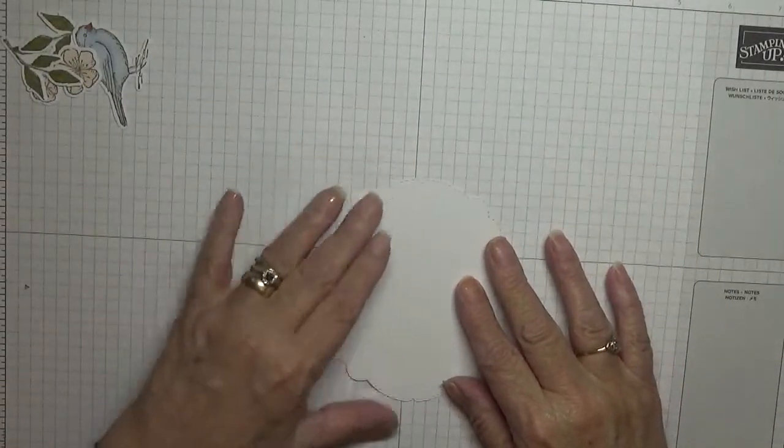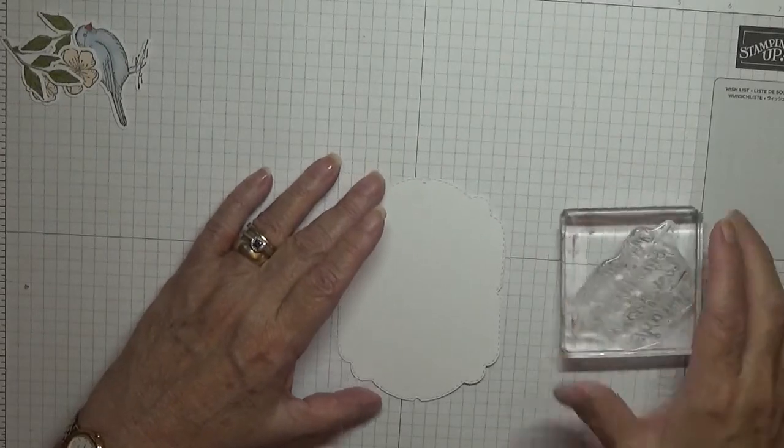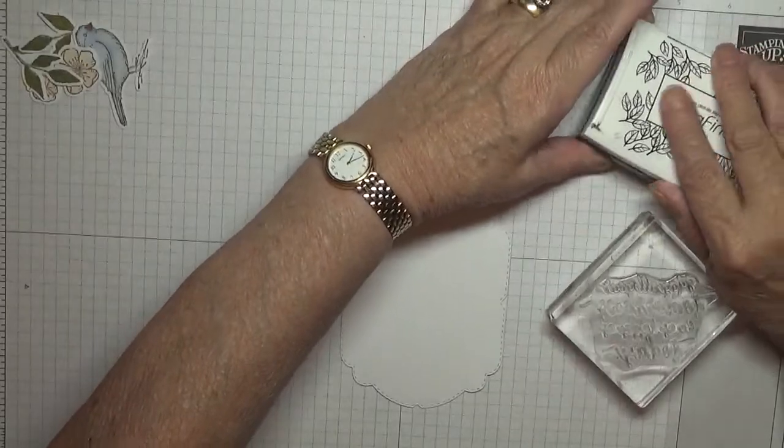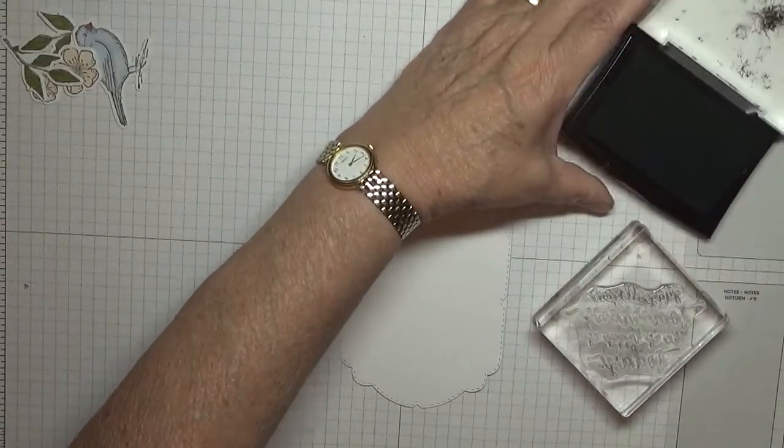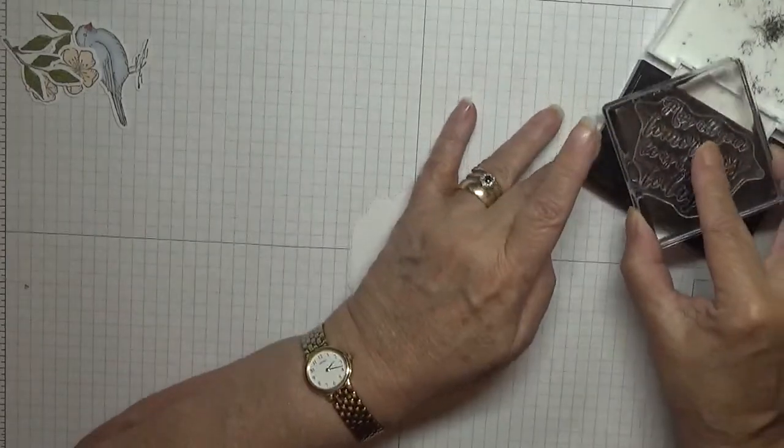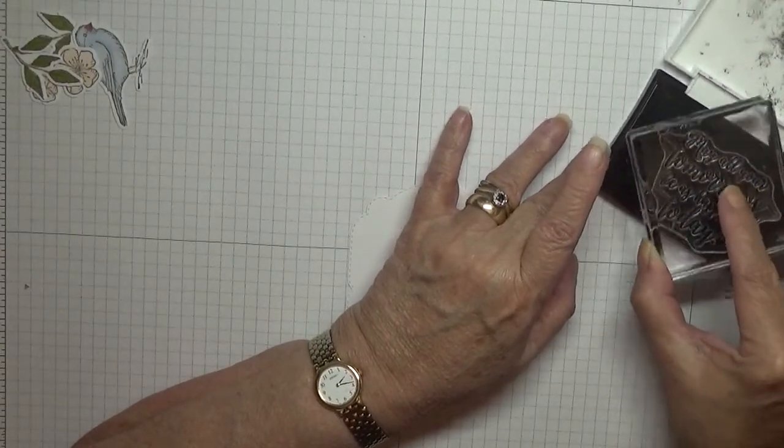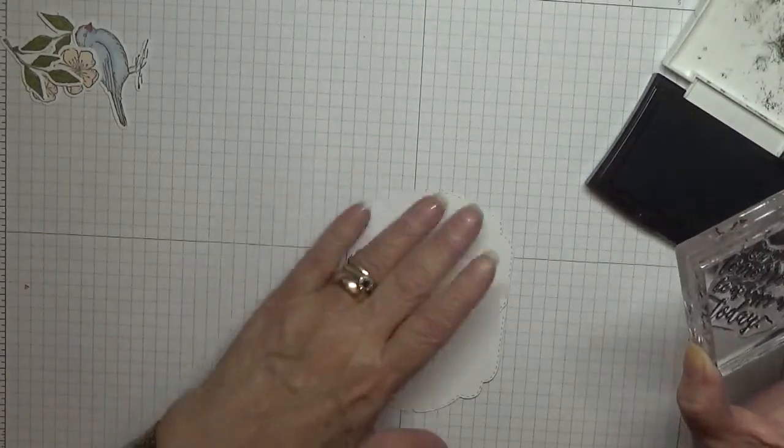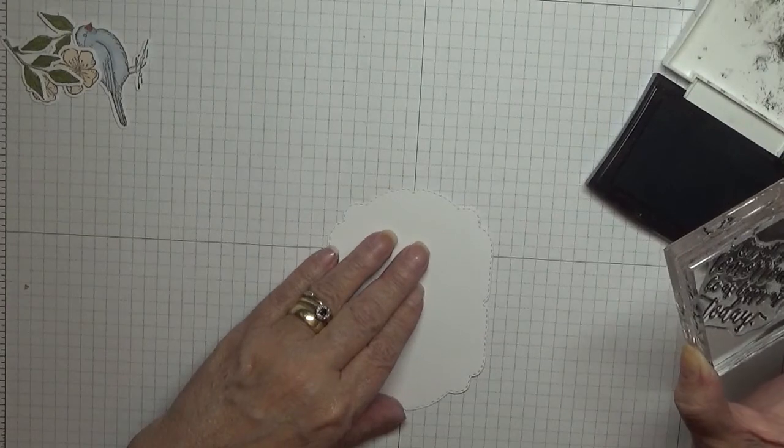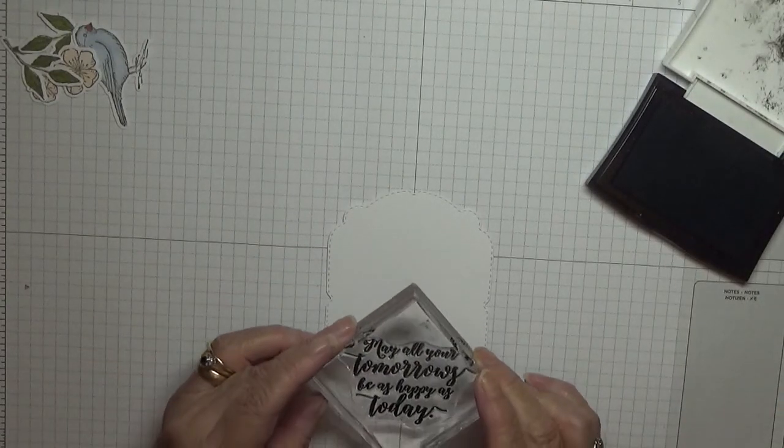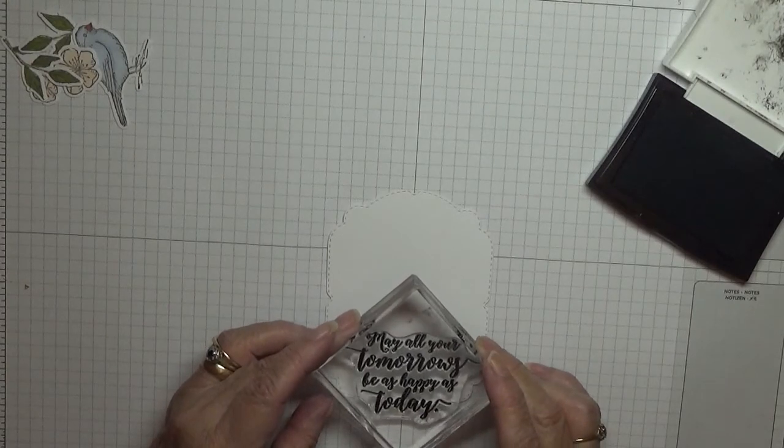On this, we need to stamp with our sentiment. So I've got it on the block with my VersaFine Onyx black ink. I am inking this up and I'm going to pop that in the middle, and this I'm going to put as low as I can without going on the stitching.